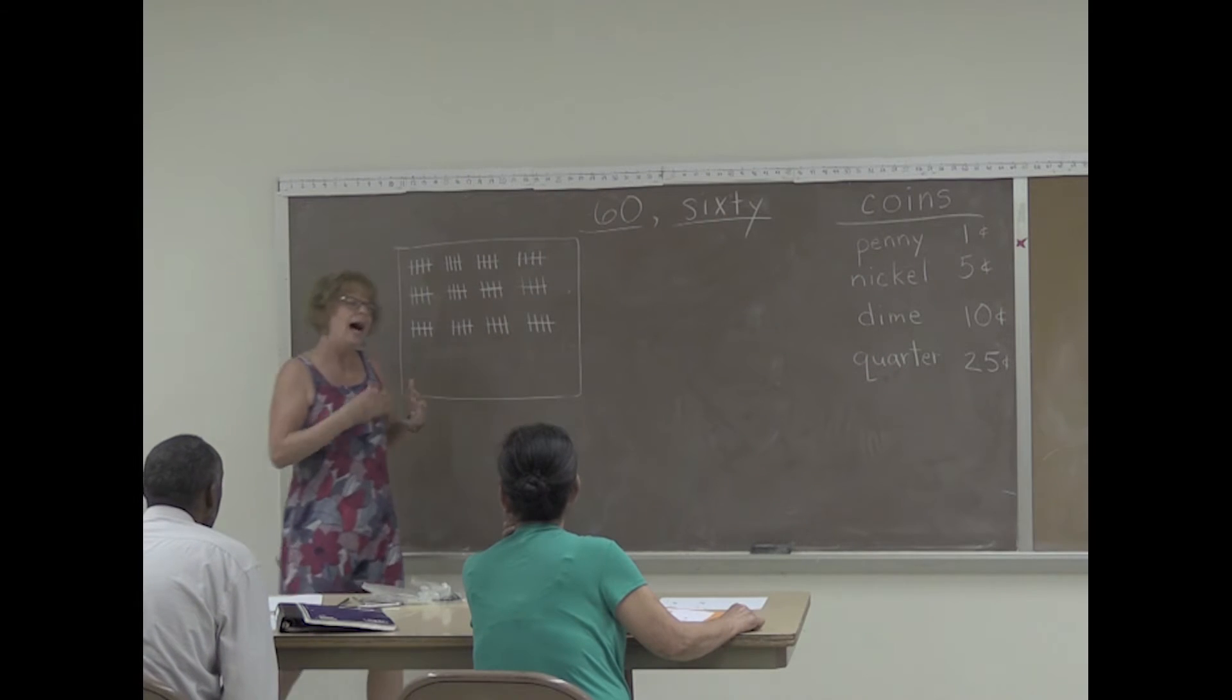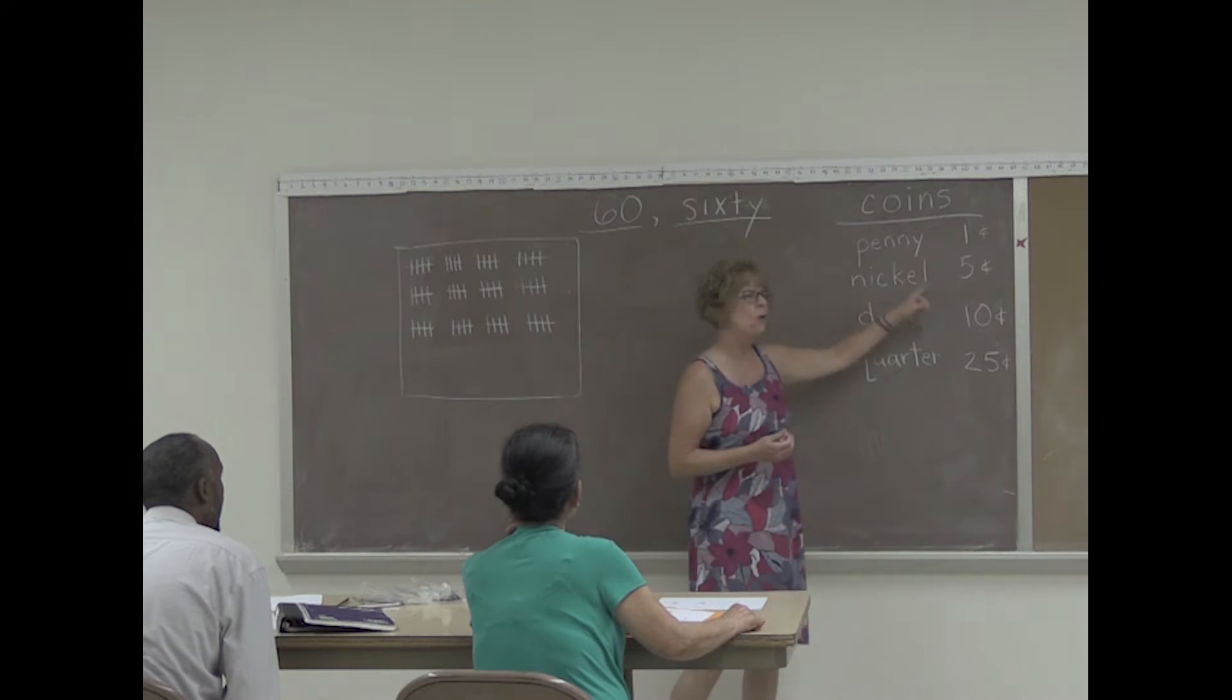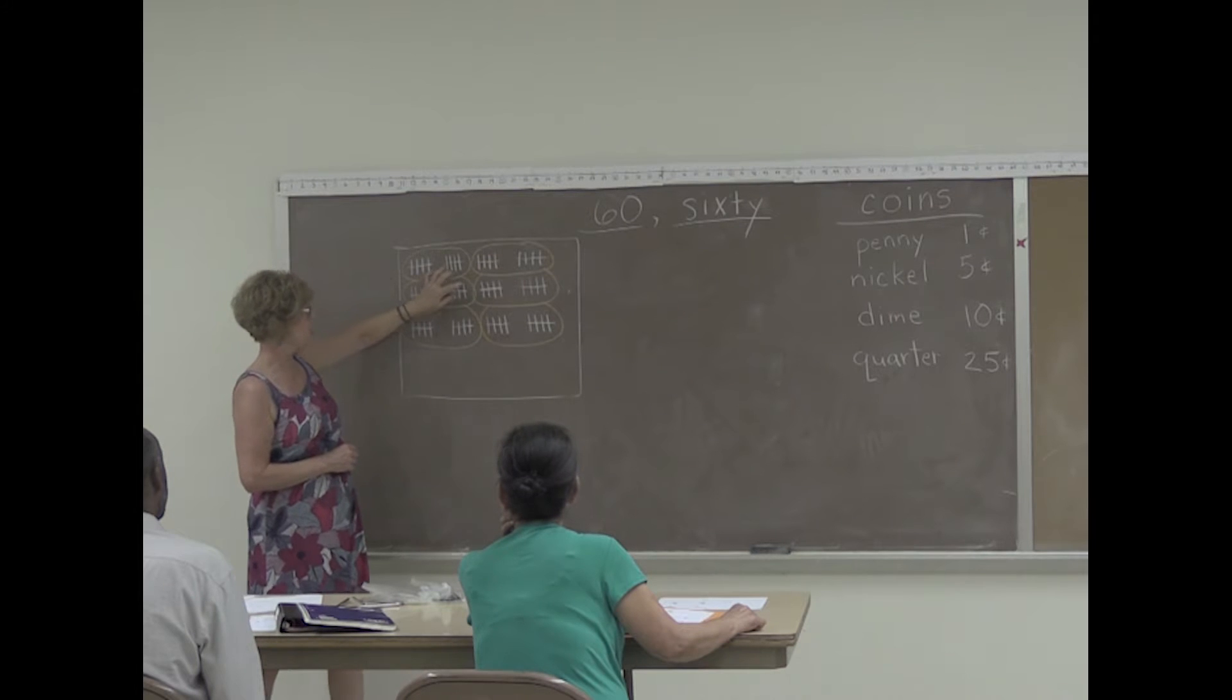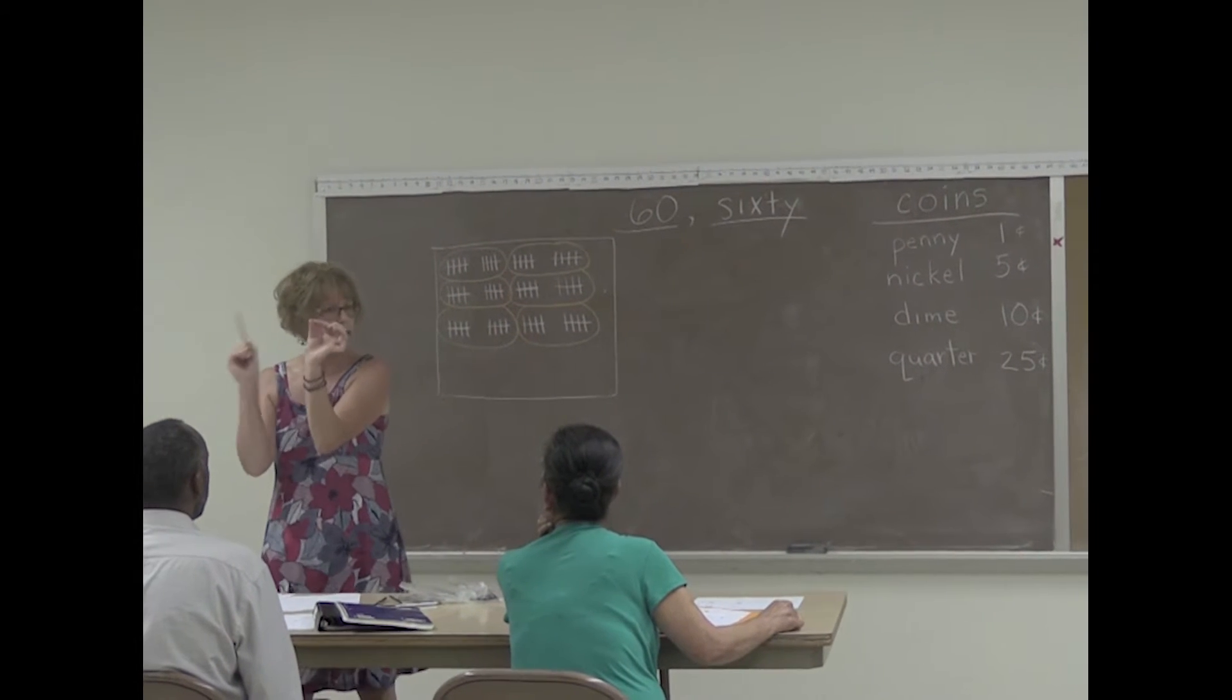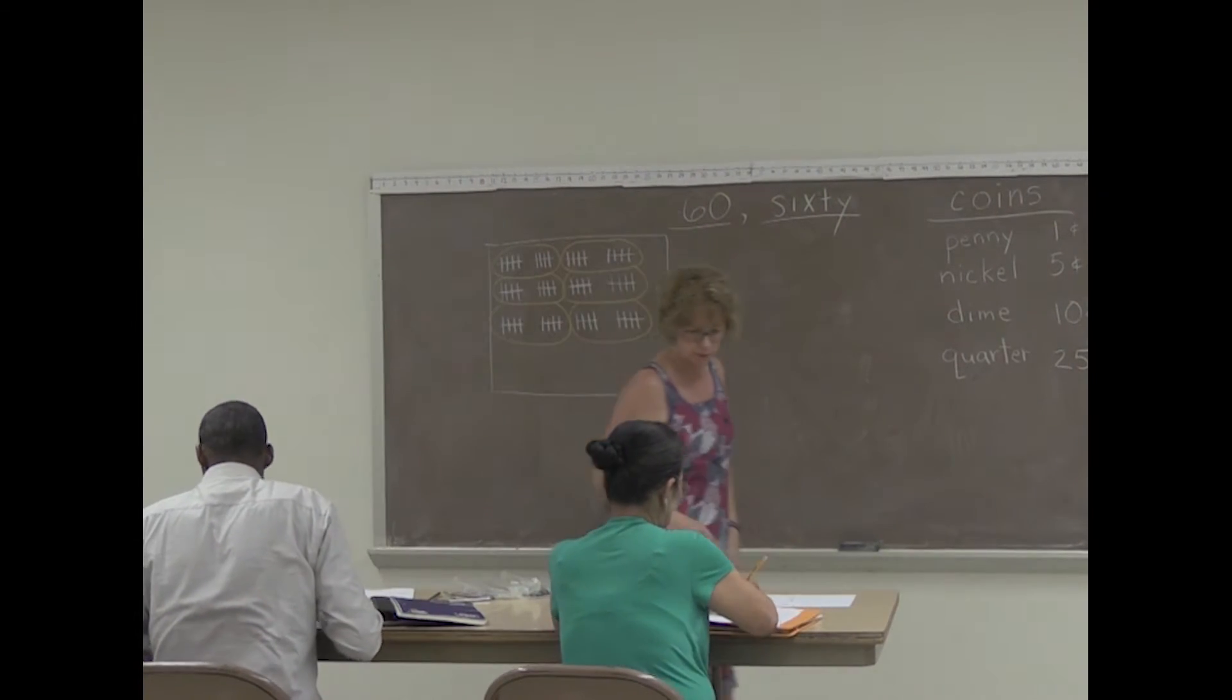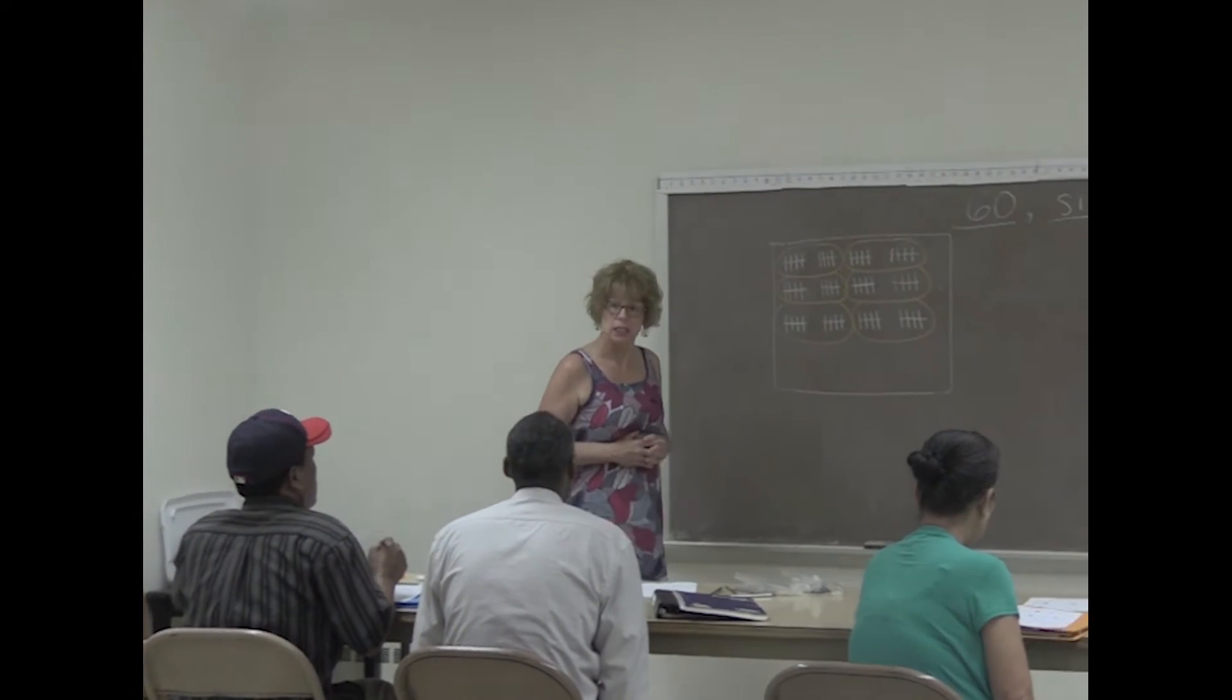Now, I want to count by 10. What coin? I'm going to circle that. 10, 20, 30, 40, 50. Take your pencil and circle 2 groups of tallies, so you have 6 circles of 10. Do that on your paper. How many circles do you have? 6 circles.